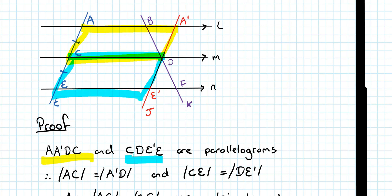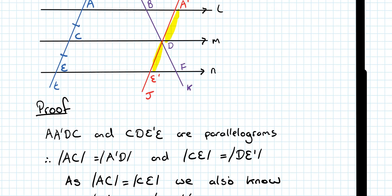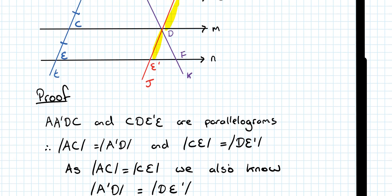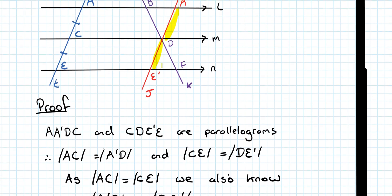Well, what else did I know? I knew that this length here is equal to this length here. So, that implies that this length is equal to this length. So, as AC is equal to CE, we also know that A prime D, E prime D, E prime being here, are equal. So, those two yellow lengths are equal. So, let's color them in. So, this length here is equal to this length here.